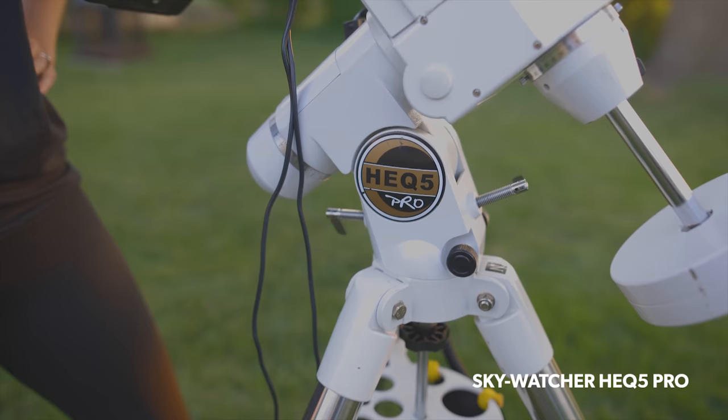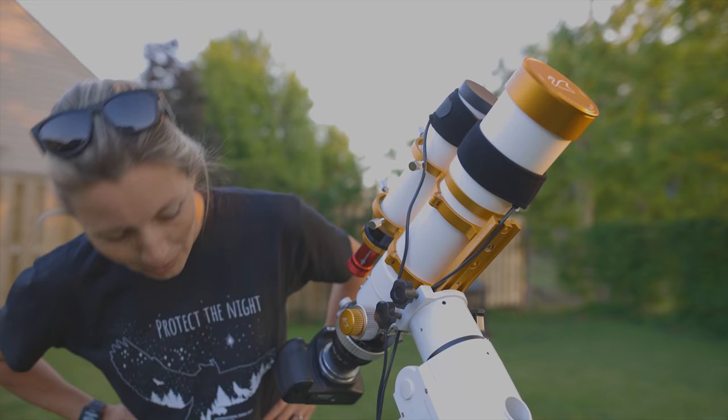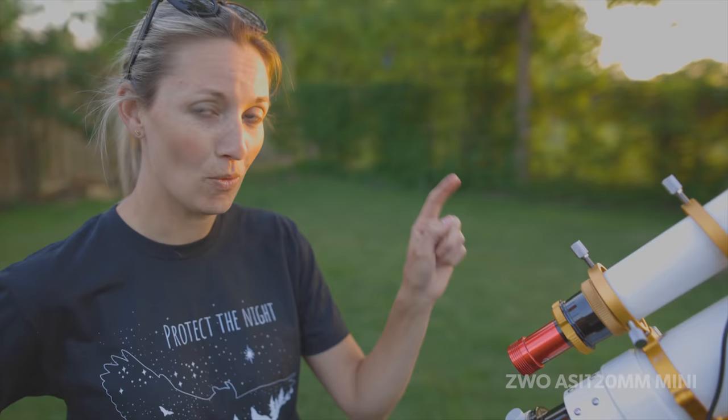And the telescope mount is the trusty old HEQ5 SkyWatcher. And this little red guy here is the ZWO ASI 120MM mini guide scope camera.